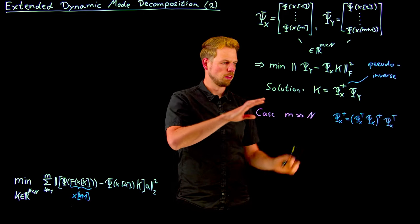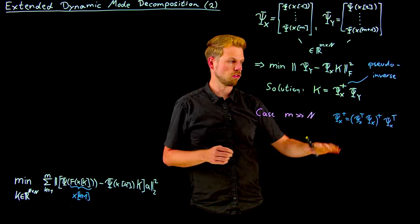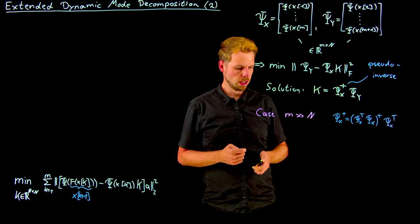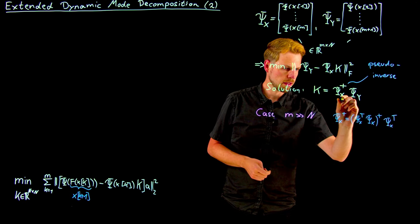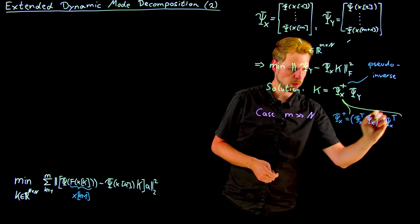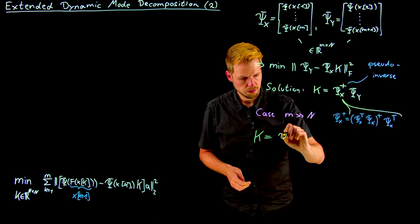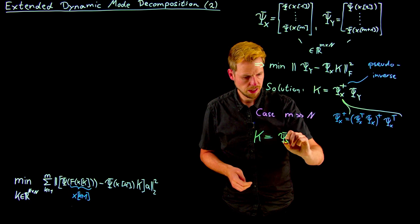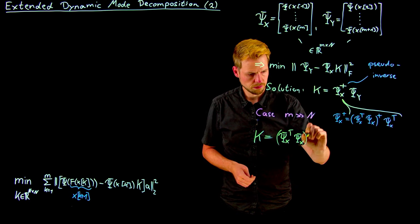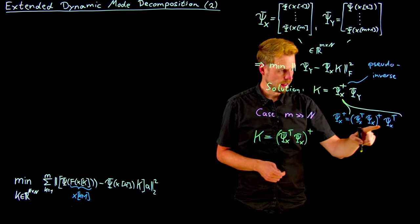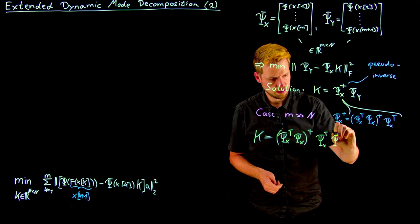So nothing specific to this EDMD algorithm or dynamic systems for that matter, it's just a standard identity you can look up for pseudoinverses. And so what I can do is I can replace this one by this expression. And what I gain is, or let's just write it out maybe, psi x transpose psi x, pseudoinverse, and then psi x transpose psi y.